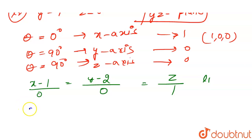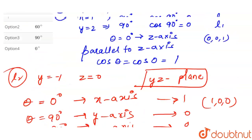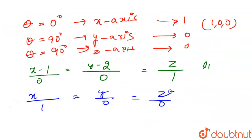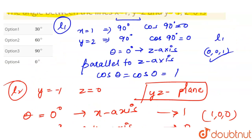For line 2, the direction cosines are (1, 0, 0), and the line passes through y=-1, z=0. So the equation becomes: x/1 = (y+1)/0 = (z-0)/0.